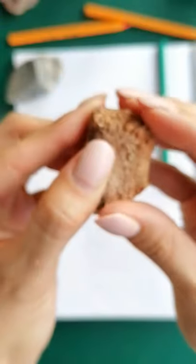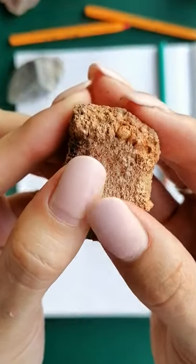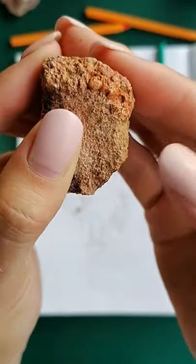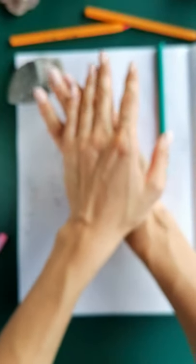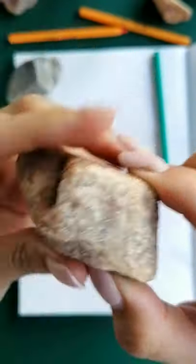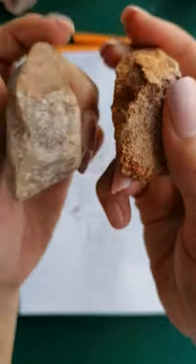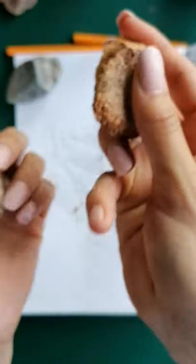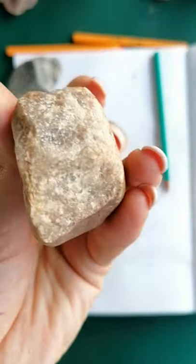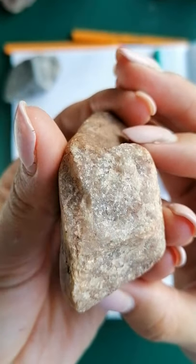The second metamorphic rock example I have is when I take a sandstone such as this one — remember the sandstone, very rough-textured with pieces of sand falling out. Now if I take this sandstone and place it under immense pressure and heat, it will eventually transform into a quartzite. Crazy to think that this sandstone will turn into a quartzite, but it does. So when the sedimentary rock, the sandstone, is placed under high pressure and high heat, it will metamorphose into a quartzite.